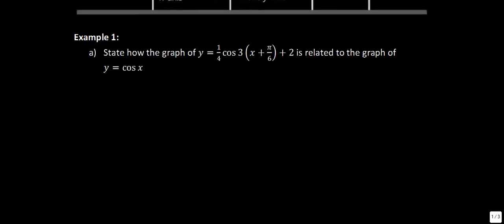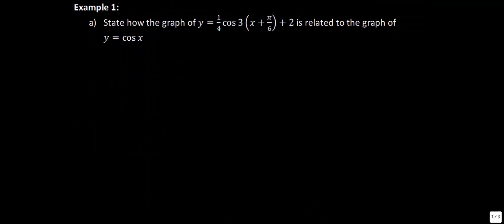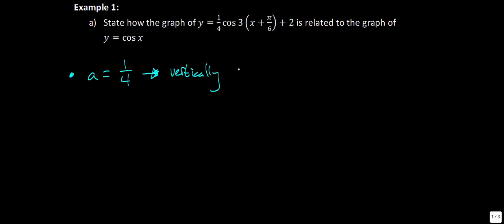So as you can imagine, if we take a look at example 1, we're going to be dealing with all these different things. What I first want you to do is write down what each of these numbers basically indicates in relation to the graph of y = cos(x). Assuming we know that graph very well, how is this going to get moved? Let's start with the first piece of information: a is equal to one quarter.